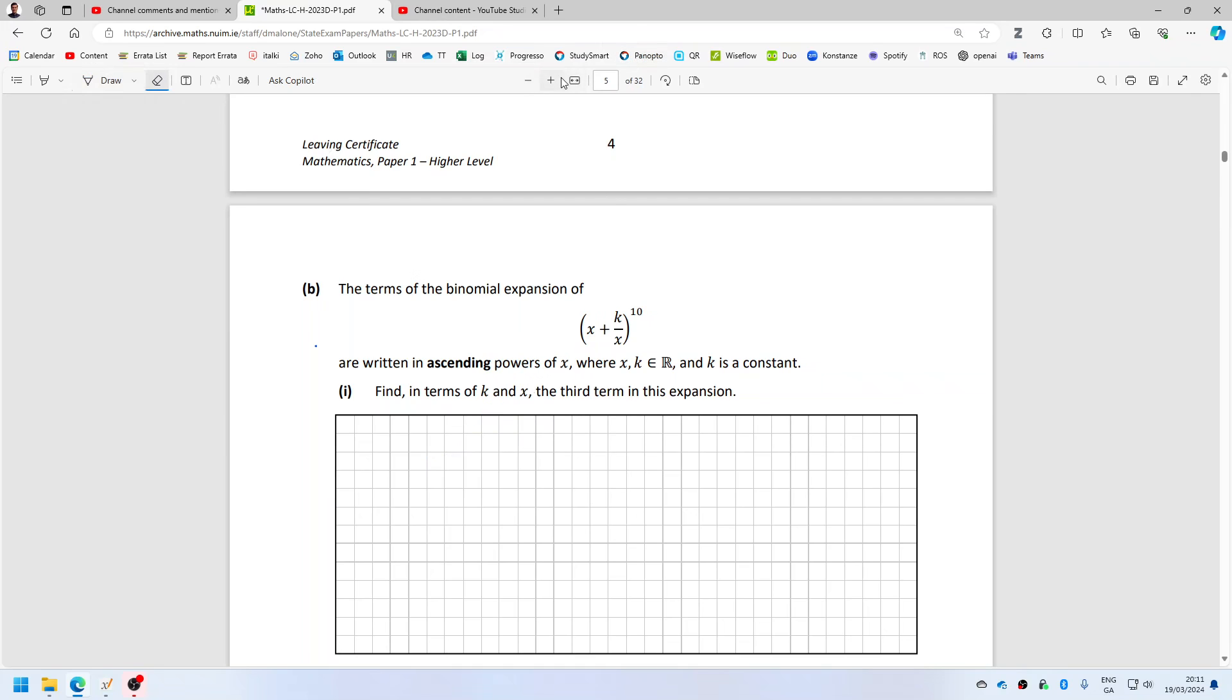Okay, ascending powers, so it's going to start off - you can think about it like this: at one end we'll have x power 10, and then the other end we'll have k over x power 10. So if it's written in ascending powers, this is actually at the beginning.